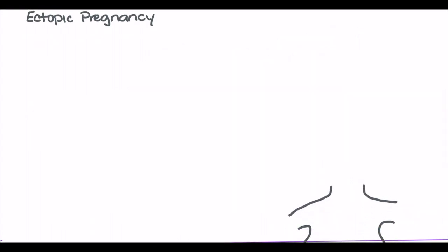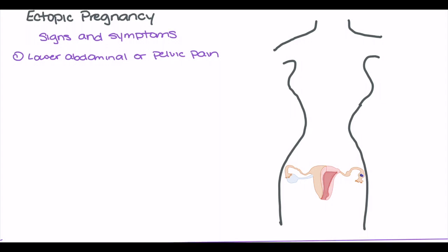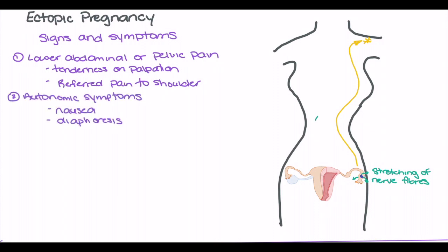Ectopic pregnancy is associated with a number of signs and symptoms. Lower abdominal and pelvic pain are some of the most common, presenting in patients with growing or ruptured ectopic pregnancy. This pain is associated with growth of the blastocyst, leading to stretching of nerve fibers surrounding the walls of the fallopian tube. The pain generally increases on palpation and may be referred to the shoulder on the same side as the affected fallopian tube. Due to the stretching of these nerve fibers, patients may also present with autonomic symptoms such as nausea or diaphoresis.